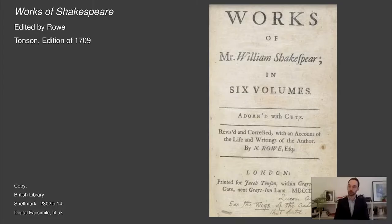In 1709, the London bookseller Jacob Thompson published the first 18th century edition of William Shakespeare's plays. Previously, Shakespeare's collected works had appeared only in single volume folio format. Thompson's 1709 edition introduced a series of radical changes in organization and layout. Printed in a compact octavo format, it was published as a six-volume set, accompanied by engravings. Most significantly, Thompson commissioned the playwright and translator Nicholas Rowe to edit the plays. Rowe's name appeared prominently on the title page beneath the advertisement, 'Revised and Corrected.'